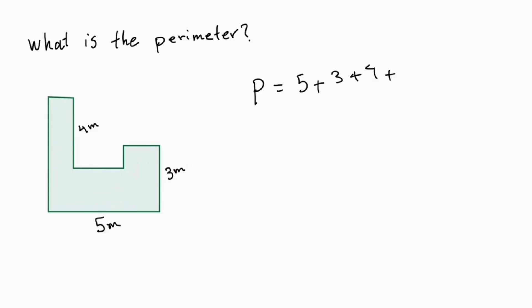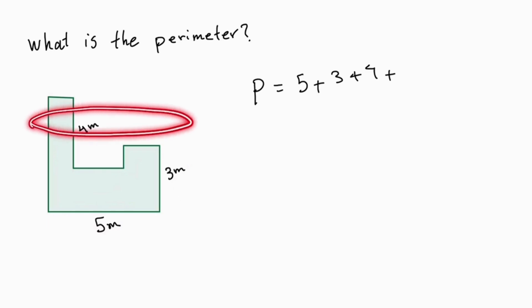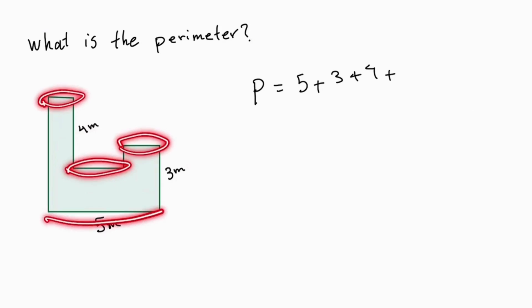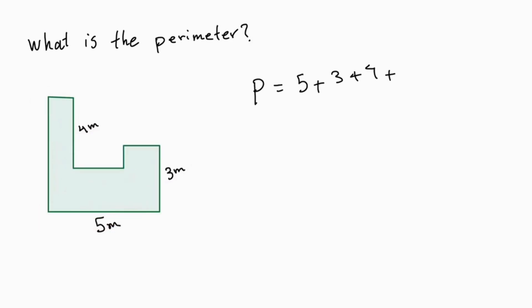Now we know that this shape has right angles, which means this entire side must be equal to this side. So this plus this plus this must be equal to this, which means I can just write plus 5 and I'm already done with this part.